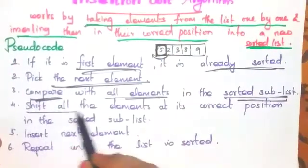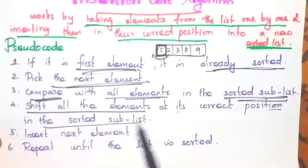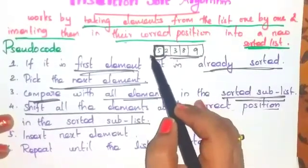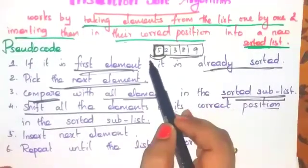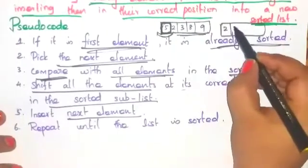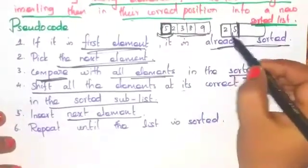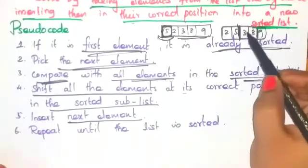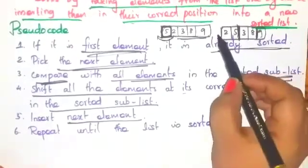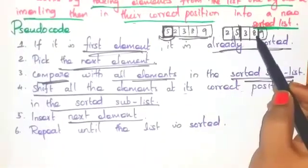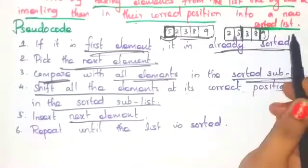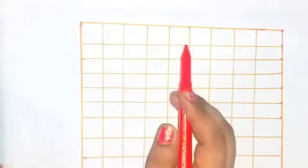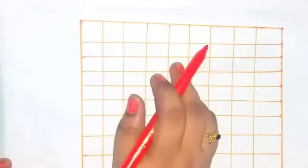See the next point: shift all the elements to their correct position in the sorted sub-list. Take the elements from the unsorted sub-list, compare with the sorted elements, and place that element in its correct position in the sorted sub-list. Insert next element. Two, five are the sorted list. Next, take the next element — three — you have to insert this element in the sorted list. Take next element and insert that element in the sorted array at its correct position. Repeat the same procedure until all the elements in your list are sorted. Let us see one example so you can clearly understand the insertion sort algorithm.